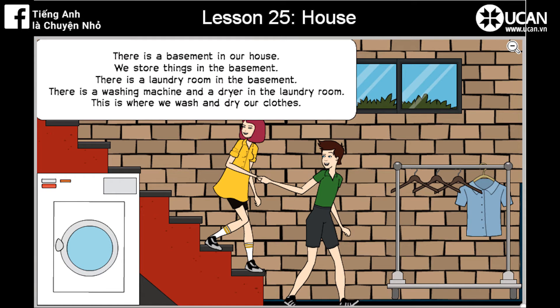There is a basement in our house. We store things in the basement. There is a laundry room in the basement. There is a washing machine and a dryer in the laundry room. This is where we wash and dry our clothes.